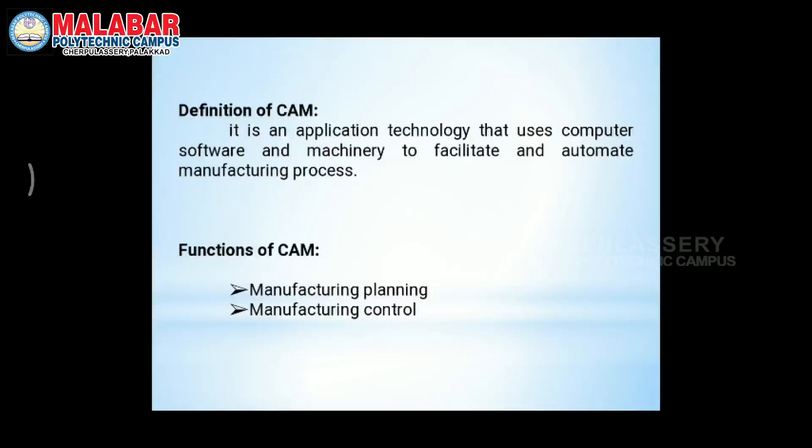We have a facility called CAM application technology. For example, consider a car production shop. This is an automobile production shop: body building, painting, engine assembly, final polishing — all are in-line processes. This is a complete robotics and computer-automated process.